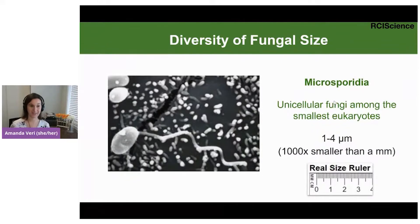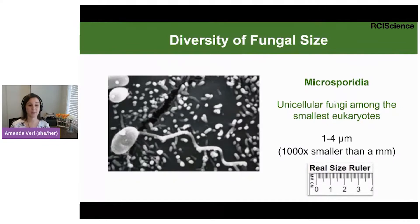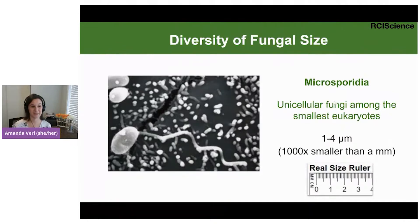On the other end, fungi are also among the smallest eukaryotes on earth. These are microsporidia — unicellular fungi between one and four micrometers in size, which is a thousand times smaller than a millimeter. So not only are they smaller than what you can see with your eye, they're even smaller than yeasts or bacteria, which are themselves impossible to see on their own.